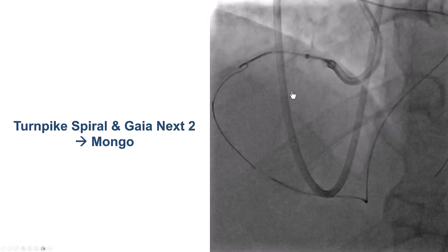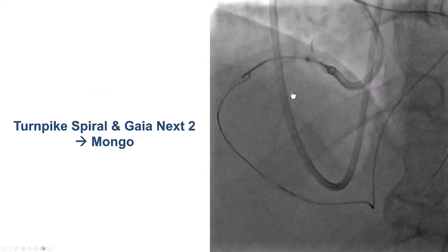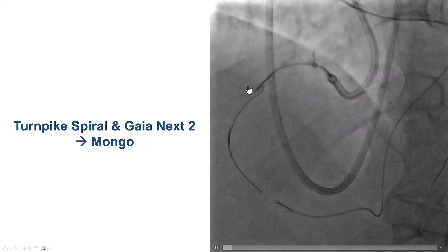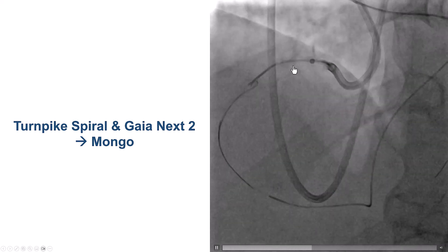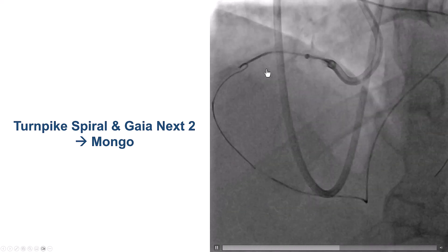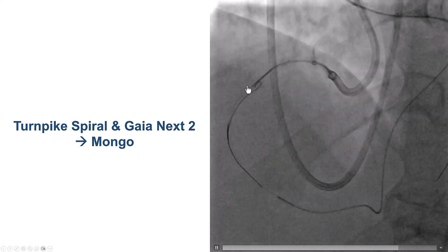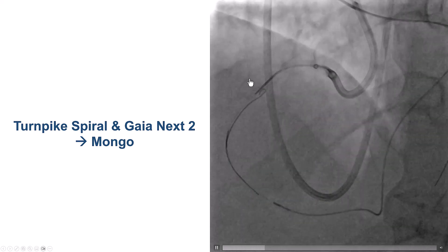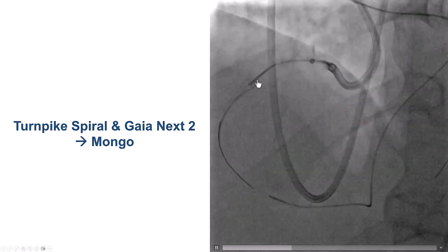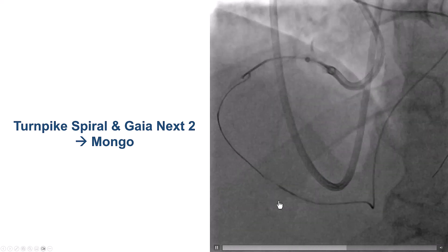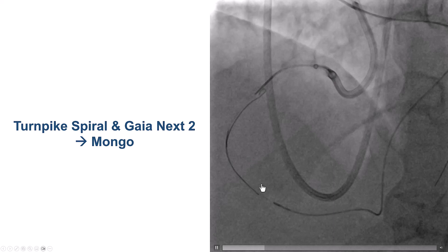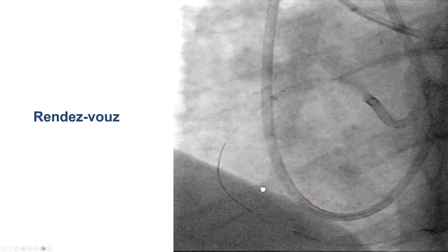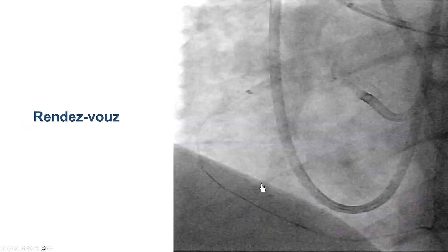We now had very good clarification of where the proximal cap was, defined by the retrograde wire. We then used an antegrade Turnpike Spiral with a Gaia Next guidewire. The wire seemed to advance along the course of the vessel distally — were we following the true lumen? A contralateral injection suggested we were on track.